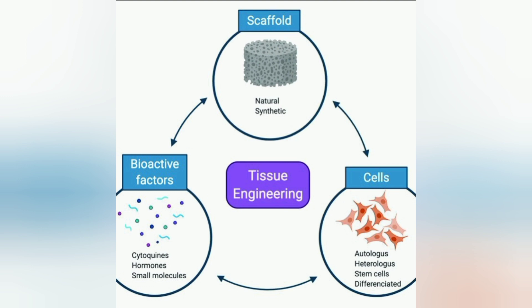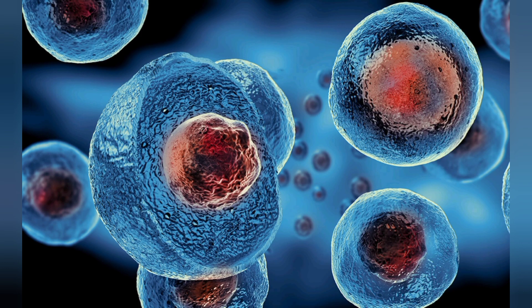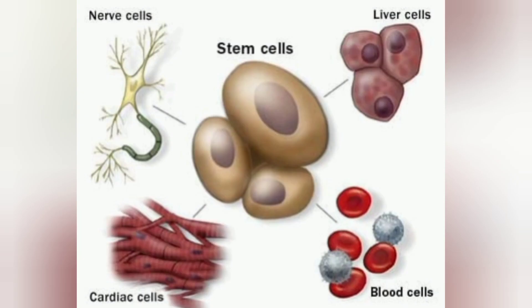The very first step is selection of stem cell. A cell is the very basic unit of the body that divides and grows into tissue, organs and the whole body. There are different types of cells for different specialized functions in the body. But the stem cell is the cell which can divide into different types of cells and can make different tissues and organs.